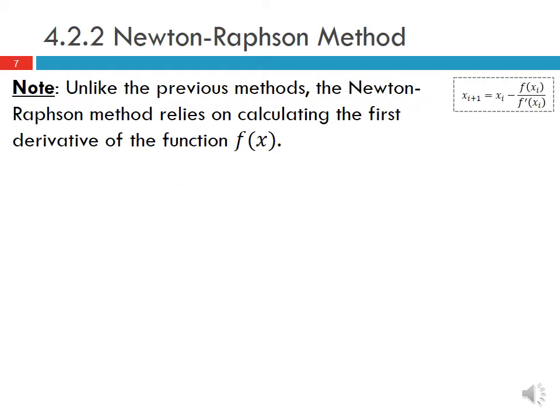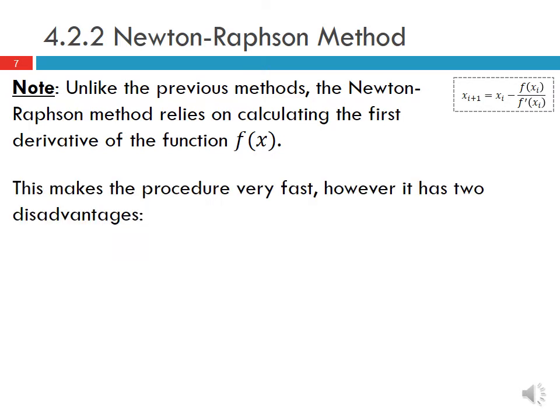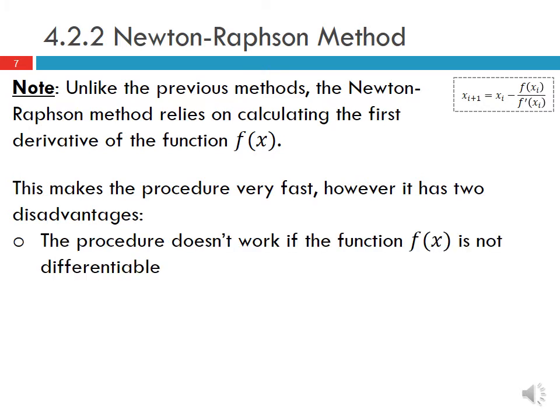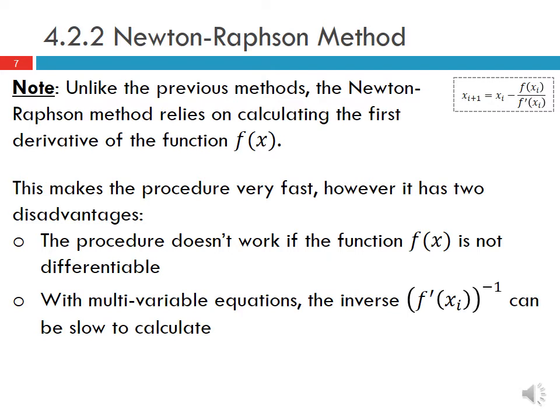Unlike the previous methods, the Newton-Raphson method relies on calculating the first derivative of the function, which makes the procedure very fast. However, it has two disadvantages: first, the procedure doesn't work if f of x is not differentiable; and second, with multivariable equations, the inverse of f prime of xi can be slow to calculate.